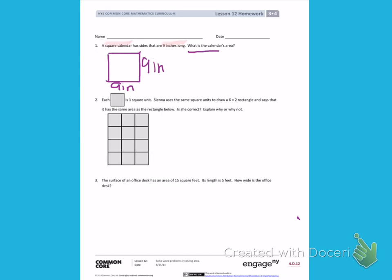Looking back at the question, I'm being asked to find the calendar's area. Like we've been practicing, we're going to multiply the length times the width to find the area. So I will multiply 9 times 9. 9 times 9 equals 81. We're measuring in inches, and this is the area, so I'm going to label this as square inches.